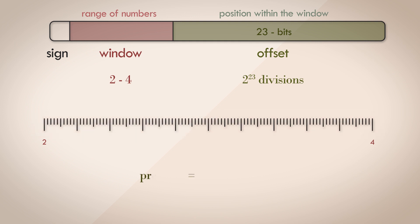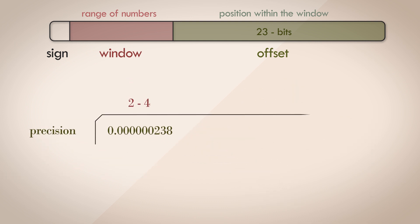Let's calculate the precision. All we do is divide the total numbers in the range by 2 to the power of 23. When the window is 2 to 4, the precision is this tiny number. When the window is 1024 to 2048, the precision is this. It's growing and getting worse now.